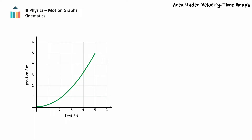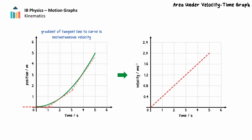Recall that for an object undergoing uniform acceleration, the instantaneous velocity can be determined by the gradient of the tangent to the position-time graph. Plotting the instantaneous velocity as a function of time provides a velocity-time graph from which we can calculate the acceleration from the gradient. We can also use the area under the velocity-time graph to understand quantitative information about the motion depicted.